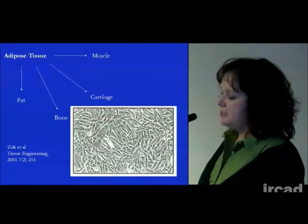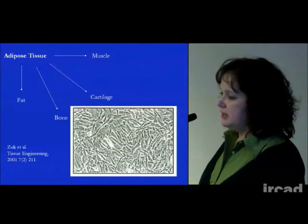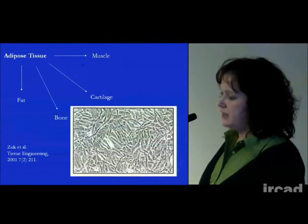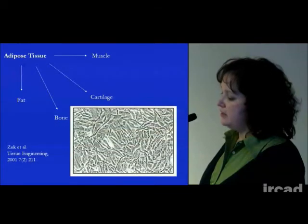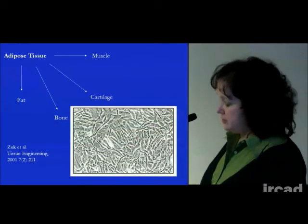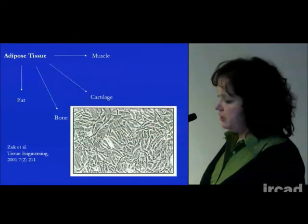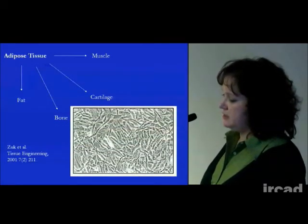Adipose tissue cells can be differentiated into muscle, bone, fat, and cartilage. This was the first report by Zuk and colleagues in 2001.